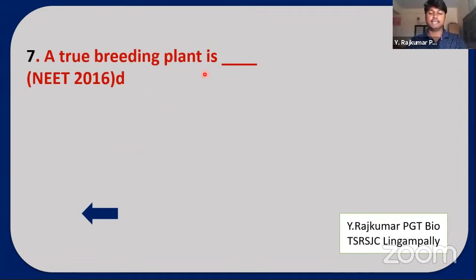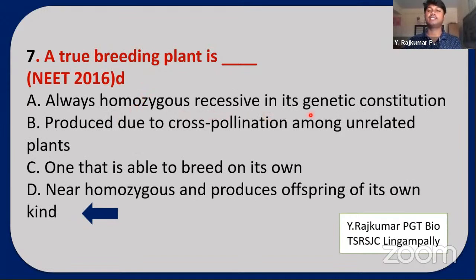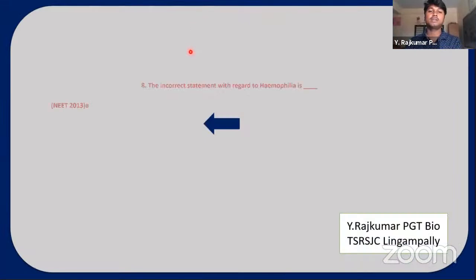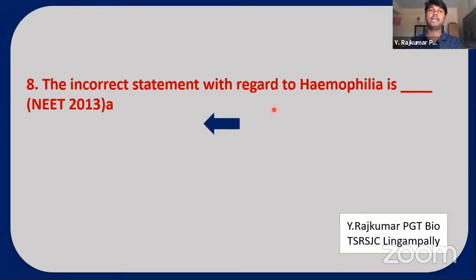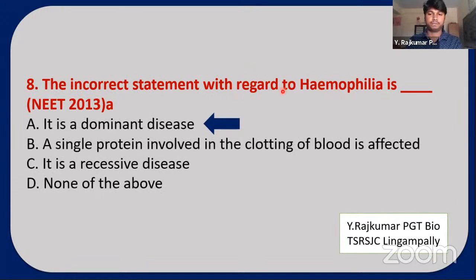Next NEET question: A true breeding plant is? Options: always homozygous recessive; produced due to cross-pollination among unrelated plants; able to breed on its own; near homozygous and produces offspring of its own kind. The answer is near homozygous and produces offspring of its own kind. Next: The incorrect statement about hemophilia — hemophilia is X-linked recessive, not dominant disease. The incorrect statement is that it is a dominant disease.